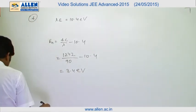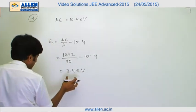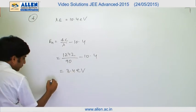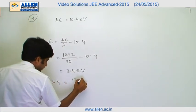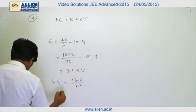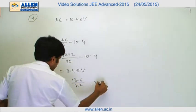Now, as we know that by comparing this value 3.4 equals to 13.6 upon n square, we get the value of n as 2. Therefore, the answer is 2.